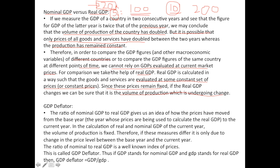Then we come to GDP deflator. The ratio of Nominal GDP to Real GDP gives us an idea of how prices have moved from the base year to the current year. Nominal GDP calculates GDP at current market price — for example, 20 units at 10 rupees gives 200. If the constant price is 7 and production is 20 units, Real GDP would be 140. The ratio of Nominal GDP (200) to Real GDP (140) shows how prices are moving from the base year to the current year — from 7 to 10 — and this movement tells us what the inflation rate is.